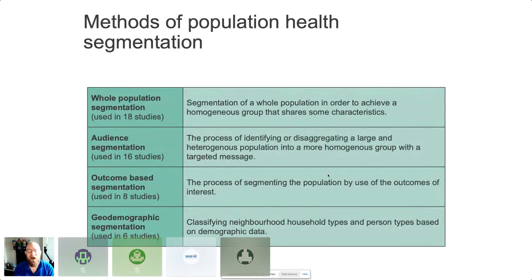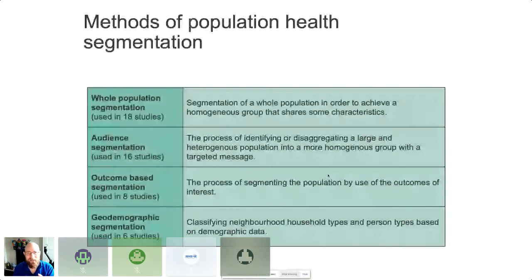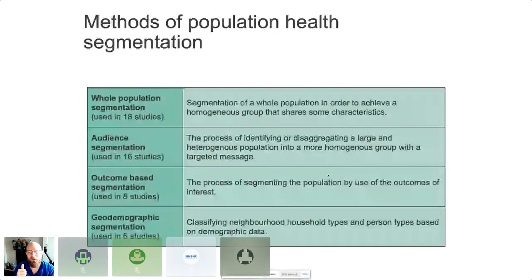Outcome-based segmentation is the kind of stuff I did for years. What we tried to do was avoid the heart attack, the stroke. Nearly 99 percent of my work was trying to stop readmissions or admissions in the first place. That's this idea of looking at a single outcome. And finally, the stuff that our friends in public health have done amazingly for years is geodemographic segmentation — understanding from your neighbourhood, household, and geodemographic data your potential life course. From where you're born and where you grow up, you have a really good understanding. That's a really rich theme of segmentation data.